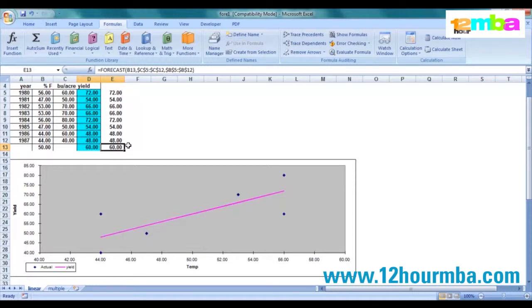So what it's telling you is if the average temperature has been 50 degrees, then using this forecast, this simple linear forecasting, we would expect the yield to be 60 bushels per acre. So if you look at the graph down below you can see the same thing.